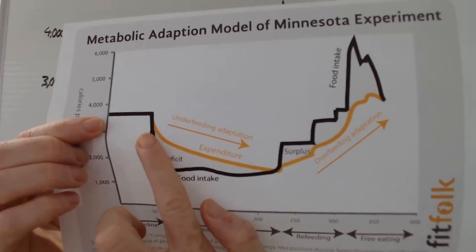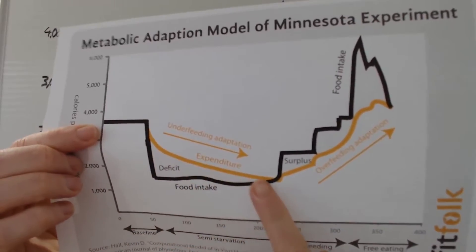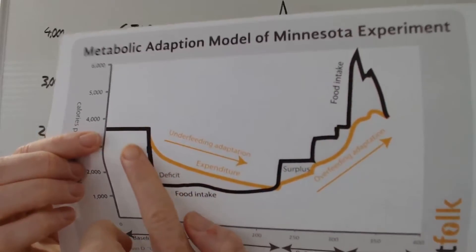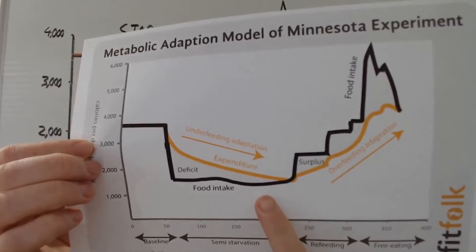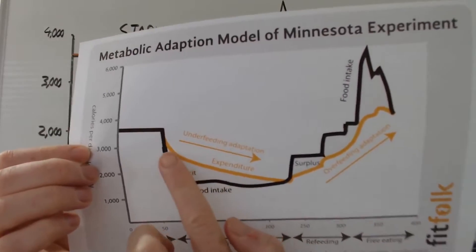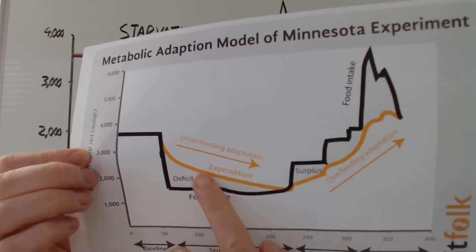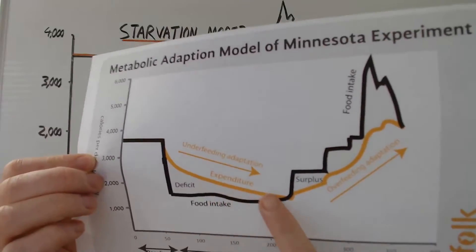And what happened was their metabolic rate, so their total daily energy expenditure, the amount of energy that they used crashed down. So from beginning at 3,500 down very quickly through 3,000, 2,500, way down to below 2,000 in the end.